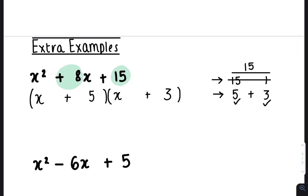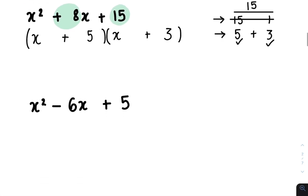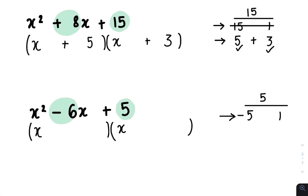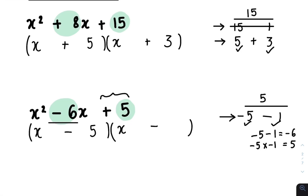We have x squared minus 6x plus 5. Open up two brackets, place an x here and place an x here. Again, look at your last number, which is a 5. List the factors of 5, which is simply 5 and 1. You then look at this number, which is a minus 6. How can I use this pair to give me minus 6? We could do minus 5 minus 1, because minus 5 minus 1 gives me minus 6, and minus 5 times minus 1 gives me positive 5 — the same positive 5 needed here and the same negative 6 needed here. So you put a minus 5 here and a minus 1 here.